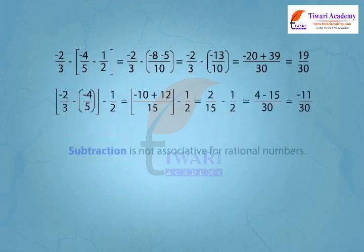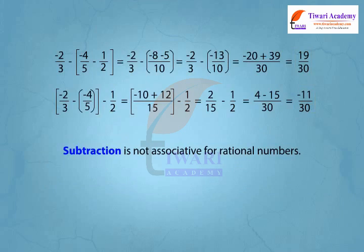Here, if we change the order in subtraction then we get different answers. Therefore, rational numbers are not associative under subtraction.